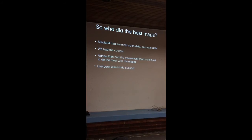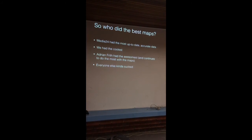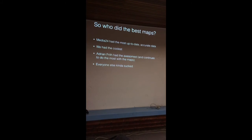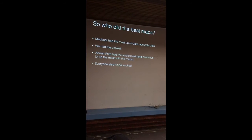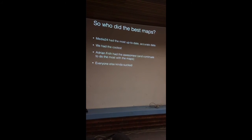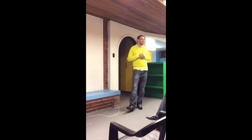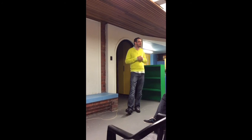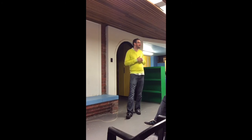So who did the best map? News24 wins for most up-to-date accurate data, by a mile. We have the coolest map — it moved really well, it was pretty. Hannah did all the colors — thank you, Hannah. And in fact, Adrian has done more with the maps afterwards than anyone else, by quite a way. Some media organizations should pick up on that — there's some really cool analysis still to do at a map level that people haven't done.